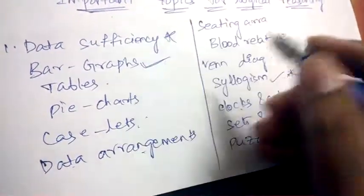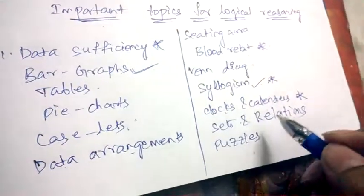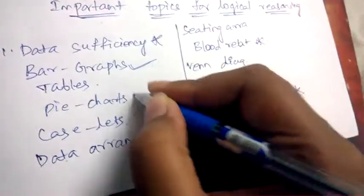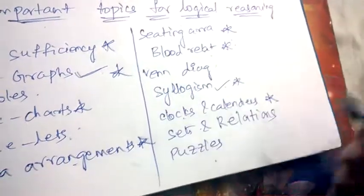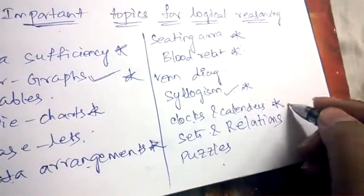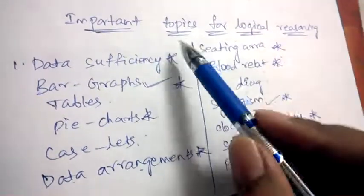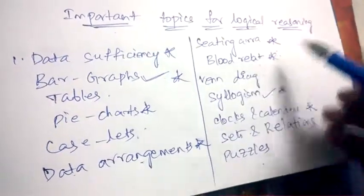Data sufficiency is very important. All are important, but out of this the most important topics are data arrangements, pie charts, bar graphs, seating arrangement, blood relation, syllogism, clocks and calendars. These are most important topics.